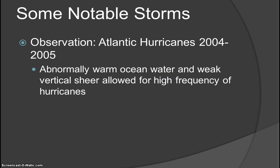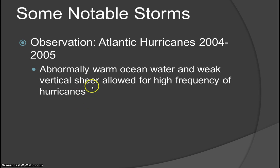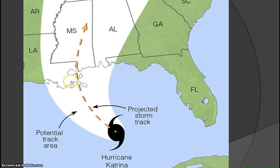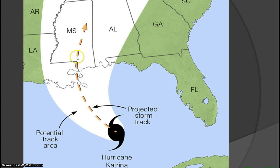A notable observation: the 2004 to 2005 Atlantic hurricane seasons saw abnormally warm ocean water and weak vertical wind shear, which allowed for a high frequency of hurricanes in 2005. Hurricane watches and warnings are issued with watches on the edges to account for variable storm paths. The projected track for Hurricane Katrina was pretty much exactly where it went. That's basically a look at hurricanes for this chapter — if you have any questions, be sure to email.